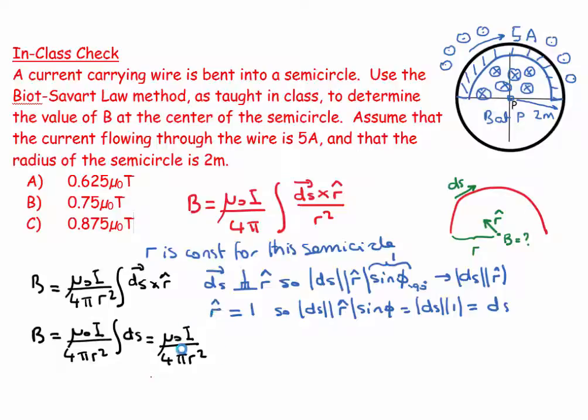The integral of ds, all those little ds's added together are the length of the wire. So it's going to be 2πr, that's the circumference of a circle, but it's a semicircle, so 2πr over 2.